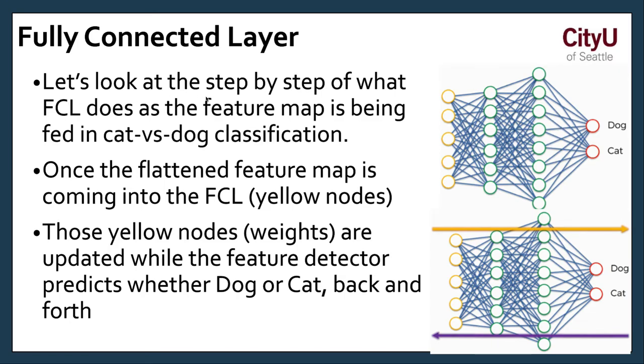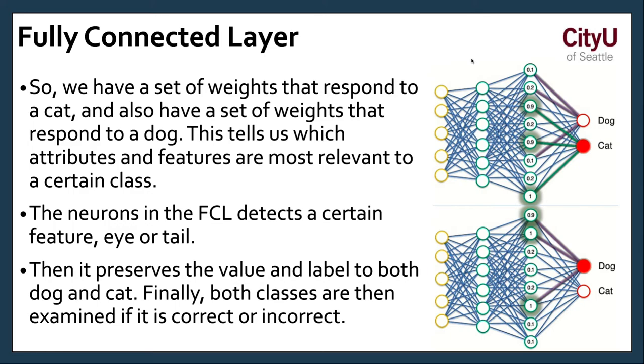Let's look at the step-by-step of what the fully connected layer as a feature map is being fed into cat versus dog classification. Remember, there are two parts. There's the regression and classification. We're doing the classification part. Once the flattened feature map is coming into the FCL yellow nodes, those yellow nodes weights are updated with a feature detector that predicts whether dog or cat back and forth. It goes back and forth. Now we have a set of weights that responds to a cat. Here you see the weights. That also has set of weights that respond to dog. This tells us which attributes and features are most relevant to a certain class. The neurons in the FCL detects a certain feature. Eye or tail.